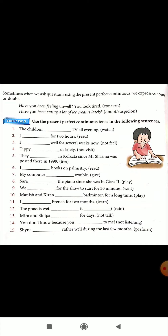Sometimes when we ask questions using the Present Perfect Continuous, we express concern or doubt. For example: 'Have you been feeling unwell? You look tired' — this shows concern. 'Have you been eating a lot of ice creams lately?' — this shows doubt or suspicion. So we can use the Present Perfect Continuous Tense to express these meanings.